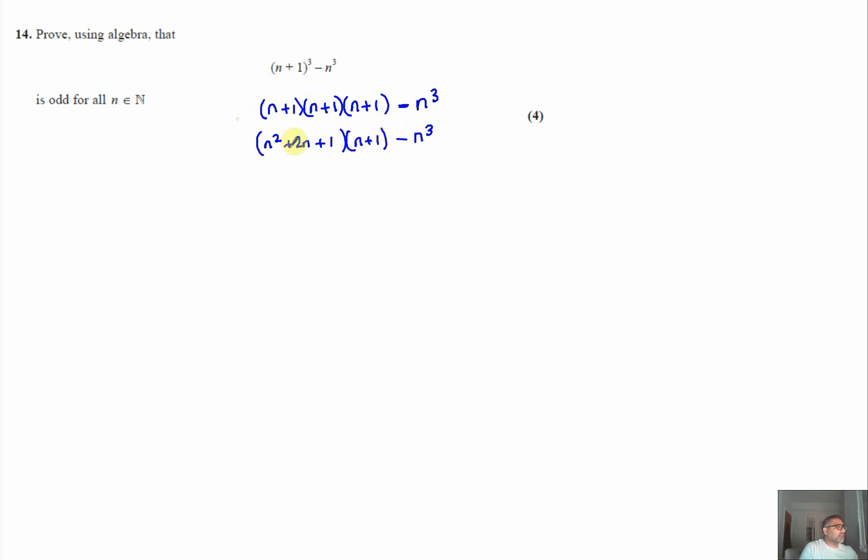Now, for this bit here, you can, again, some people like to do that like I just did with the first two. I would always say it's nice and neat to use a grid here. So I do n² + 2n + 1 times n + 1. That gives me n³, 2n², and n. n² times 1 is n², 2n and 1. And what you'll find is the diagonals will always sum together.